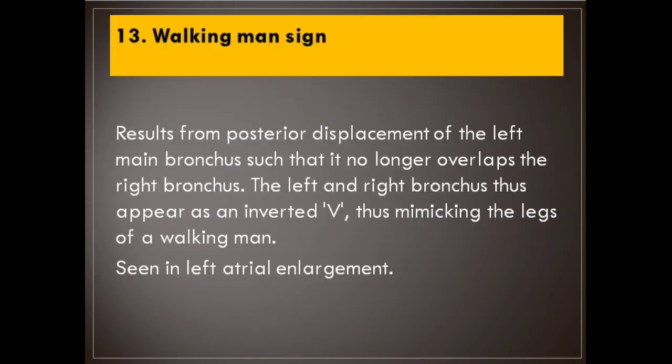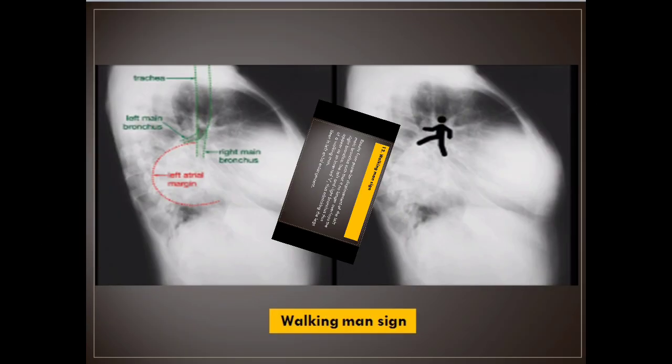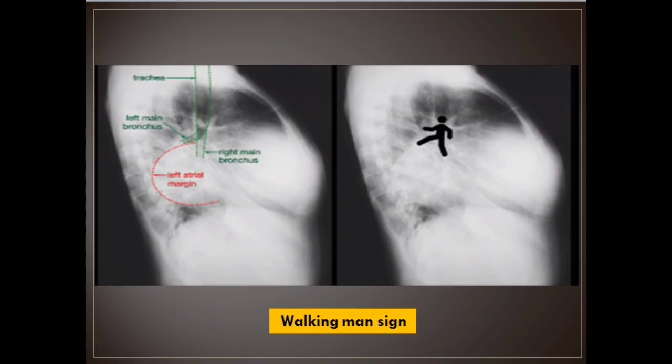Number 13: Walking man sign. Results from posterior displacement of the left main bronchus such that it no longer overlaps the right bronchus. The left and right bronchus thus appear as an inverted V, mimicking the legs of a walking man. Seen in left atrial enlargement.